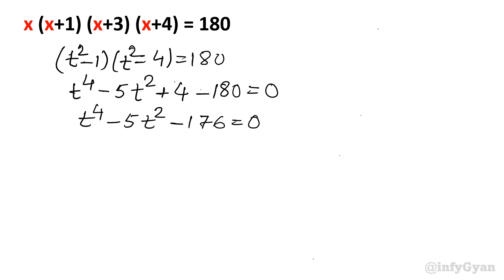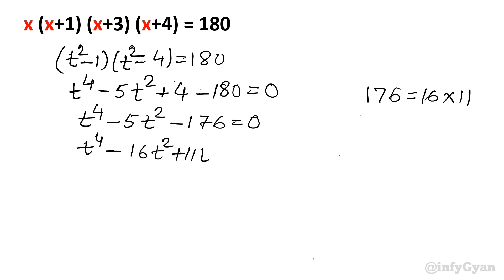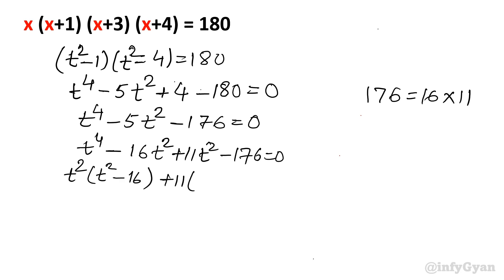Now find factorization. I can see 176 as 16 times 11. 16 times 10 is 160 and 16 times 1 is 16, so 176. Clearly, 16 minus 11 is 5, so the difference is the middle term and product is 176. So I write t⁴ − 16t² + 11t² − 176 equal to 0.